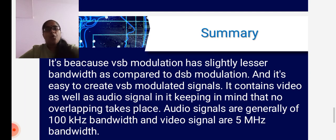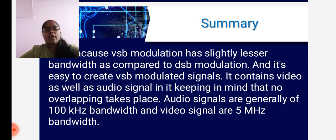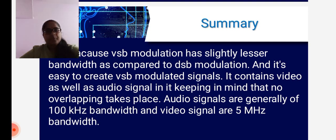So these are the overall summary: the introduction, the basic operation, the advantages, the disadvantages, and the applications which we have learned in vestigial sideband modulation towards television broadcasting. It is because vestigial sideband modulation has a slightly lesser bandwidth as compared to DSB modulation and it is easy to create the vestigial sideband modulated signal. It contains the video as well as an audio signal, keeping in mind that no overlapping takes place. Audio signals are generally of 100 kHz bandwidth and video signals are 5 MHz bandwidth.